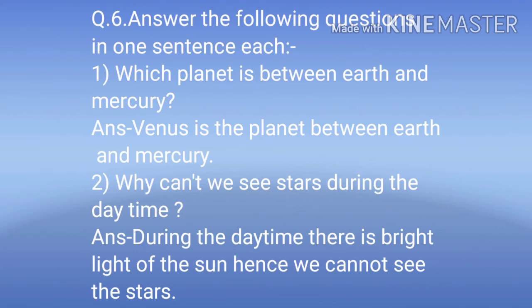Question Number 6 — Answer the following questions in one sentence each. First: Which planet is between Earth and Mercury? Answer: Venus is the planet between Earth and Mercury. Second: Why can't we see stars during the daytime? Answer: During the daytime there is bright light from the sun, hence we cannot see the stars.